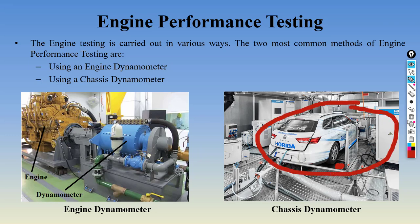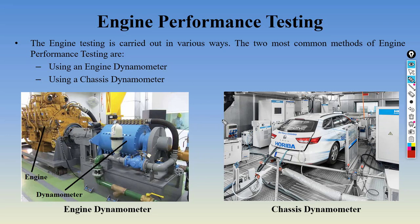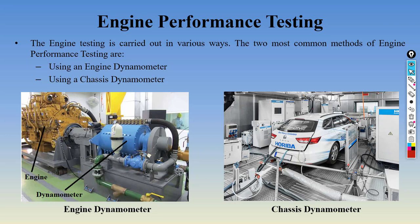Although the chassis dynamometer gives more realistic results, when you are actually designing the engine you do not have time to install the engine on the vehicle, test it, take readings, remove it, make changes, install it again — it takes too much time. So initially all testing is done on the engine dynamometer to get a basic idea and make necessary changes. After that you go to the chassis dynamometer. Chassis dynamometer testing is like the final stage testing.